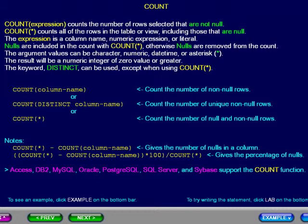The expression is a column name, numeric expression, or literal. Nulls are included in the count with COUNT star; otherwise nulls are removed from the count. The argument value can be character, numeric, date time, or asterisk. The result will be a numeric integer of zero value or greater.